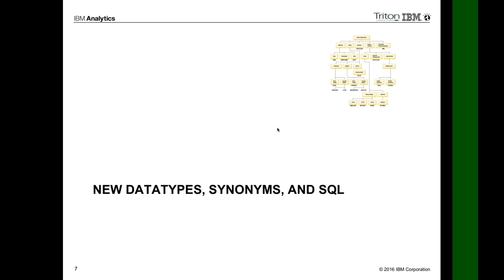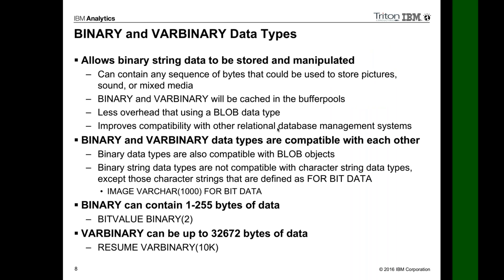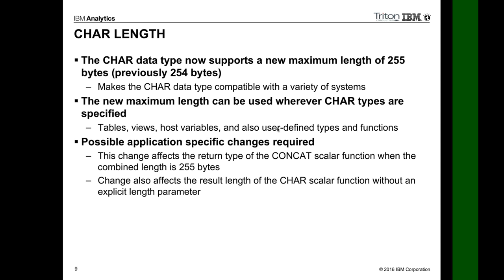There are some new data types. The first one is binary. We could do this before using blobs or char for bit-only data, but binary is the typical one the industry uses. Now you can have a binary of 255 bytes, or a var binary up to 32K. Anything bigger requires a blob. These are all compatible — binary, var binary, for-bit data, and blobs. Also, character has been extended from 254 bytes to 255 for compatibility.